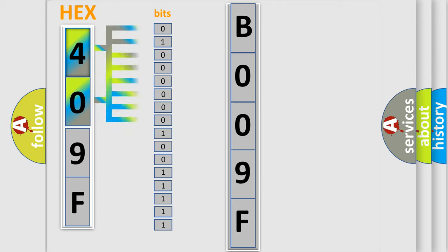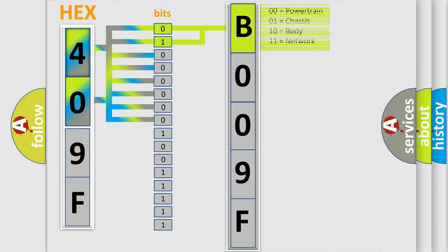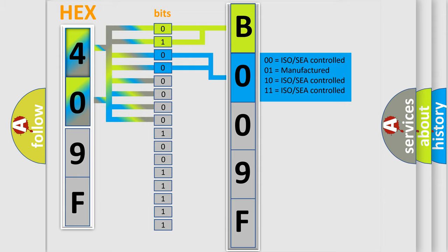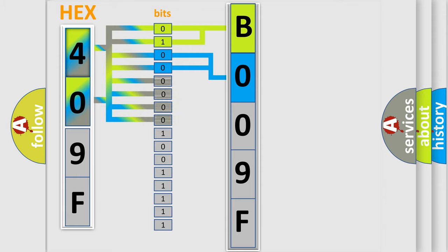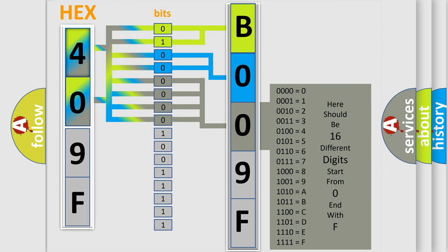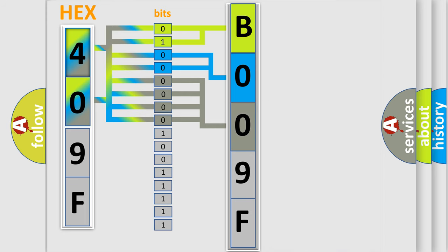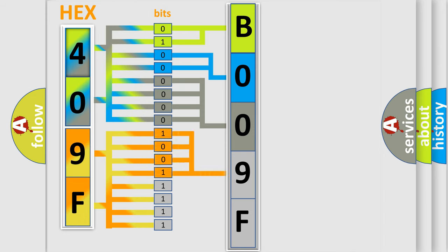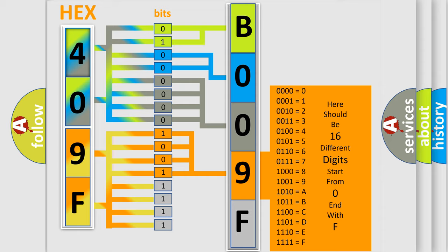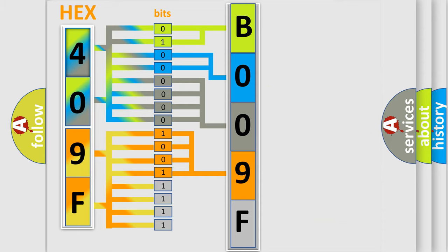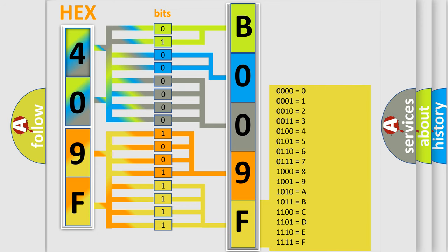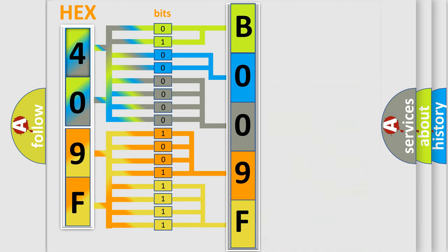The bit has two logical states: zero (low level) and one (high level). By combining the first two bits, the basic character of the error code is expressed. The next two bits determine the second character. The last four bits of the first byte define the third character of the code. The second byte is composed of a combination of eight bits — the first four bits determine the fourth character, and the last four bits define the fifth character. A single byte conceals 256 possible combinations.